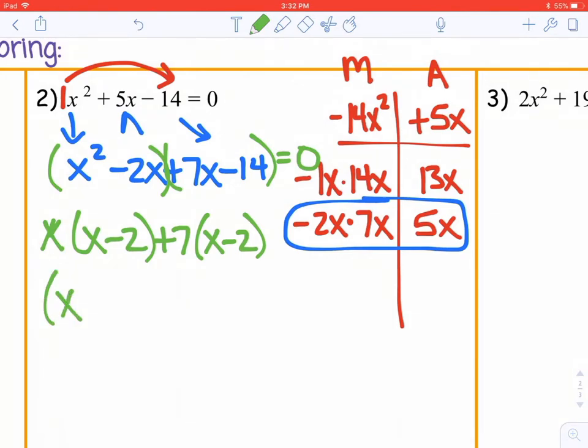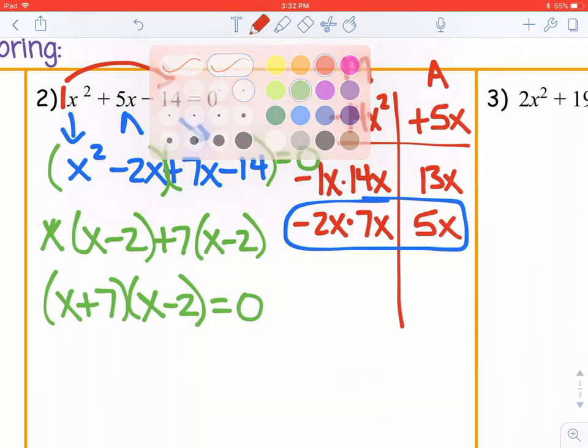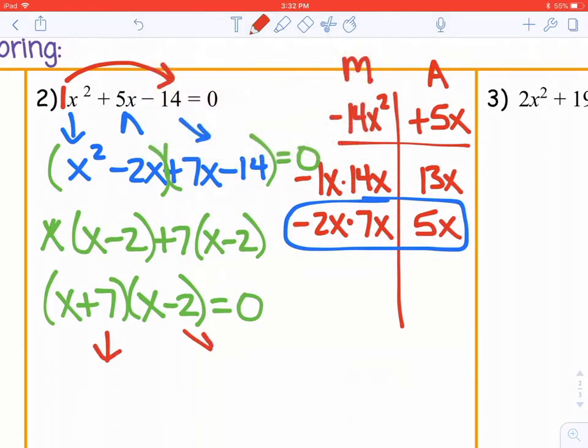When we put those together we have x plus 7, x minus 2 are the factors. All of this is still equal to 0. So to solve by factoring, we need to set each one of those equal to 0 and finish solving those little equations separately. So x plus 7 equals 0, and x minus 2 equals 0.